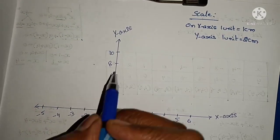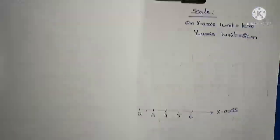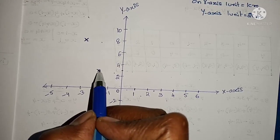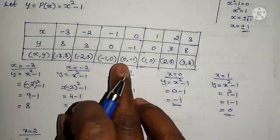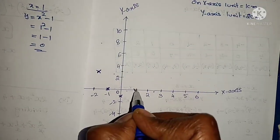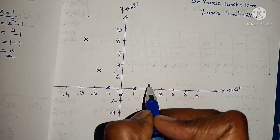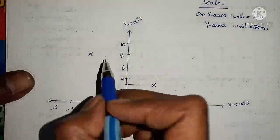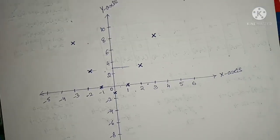Plotting the points: (minus 3, 8), (minus 2, 3), (minus 1, 0), (0, minus 1), (1, 0), (2, 3), (3, 8). Now we join all the plotted points to form the curve.